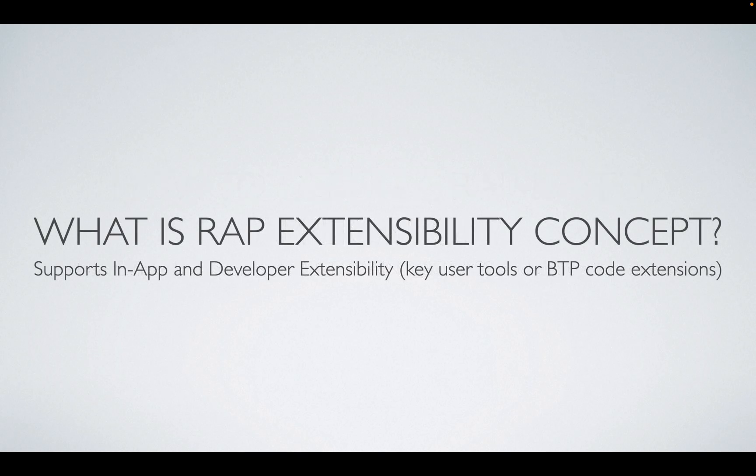What is the RAP extensibility concept? RAP extensibility uses side-by-side extensibility via BTP rather than in-app extensibility using key user tools. Developer extensibility includes code extensions via ABAP in BTP. In-app extensibility is still supported especially in on-premise systems, and it enables flexible yet upgrade-safe customizations.